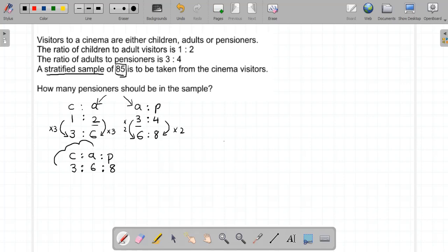Now this represents the entire population of the visitors to the cinema. So that's 3 + 6 + 8, which is 17 parts. A stratified sample is a sample where the proportion of the population is maintained in the sample.